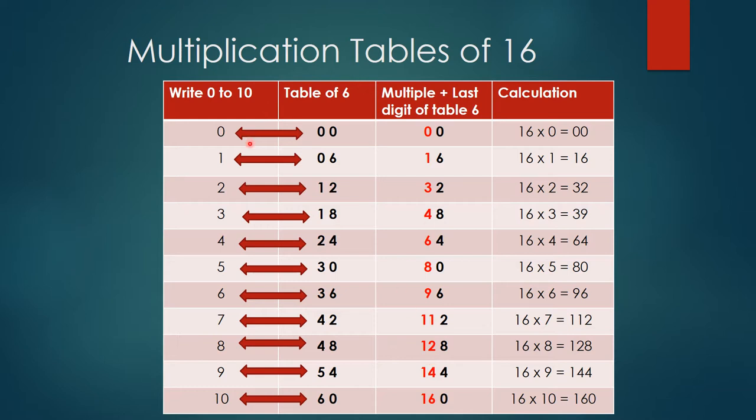Now just observe this arrow: 0 plus 0, whatever is written in the tens place of table of 6 or just the previous line. So 0 plus 0 gives me 0. 1 plus 0 gives me 1. 2 plus 1 gives me 3. 3 plus 1 gives me 4. 4 plus 2 gives me 6. 5 plus 3 gives me 8. 6 plus 3 gives me 9. 7 plus 4 gives us 11. 8 plus 4 gives us 12. 9 plus 5 gives us 14, and 10 plus 6 gives us 16.